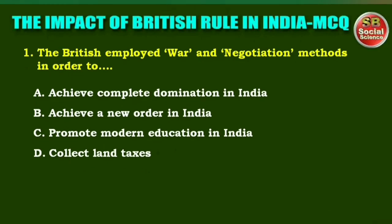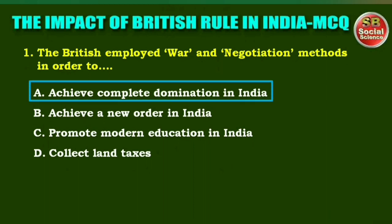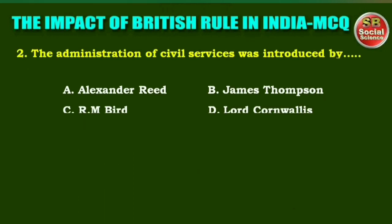First question: The British employed war and negotiation methods in order to — options are: (a) achieve complete domination in India, (b) achieve a new order in India, (c) promote modern education in India, (d) collect land taxes. The right answer is option A: achieve complete domination in India.